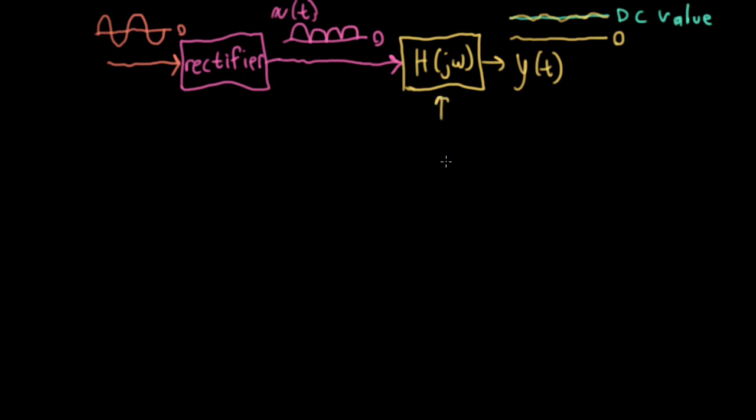In designing this filter, it would be good to have some kind of figure of merit, and the figure of merit that people usually choose is called ripple. Basically, this is the root mean square of the harmonics divided by the DC value.